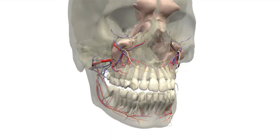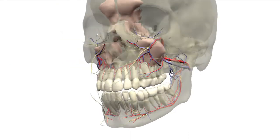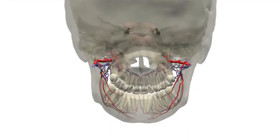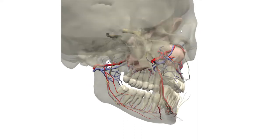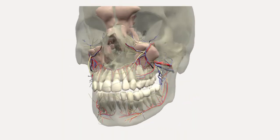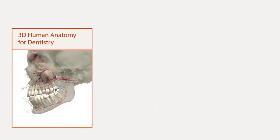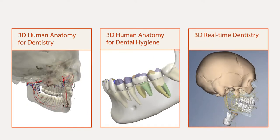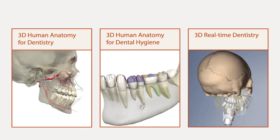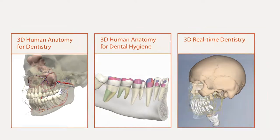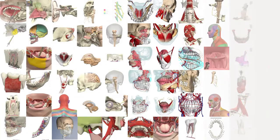Renowned for accuracy, Primal's hugely detailed anatomy model is built from real scan data. The Dental Anatomy Package is made up of three individual titles covering the anatomy of the head and neck, as well as specialized clinical 3D views with thousands of anatomical structures.